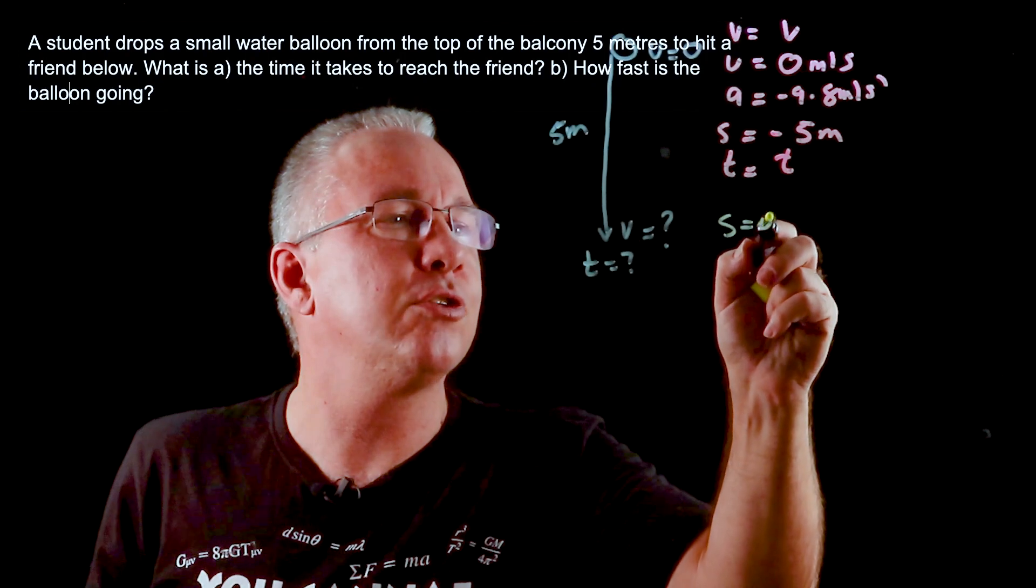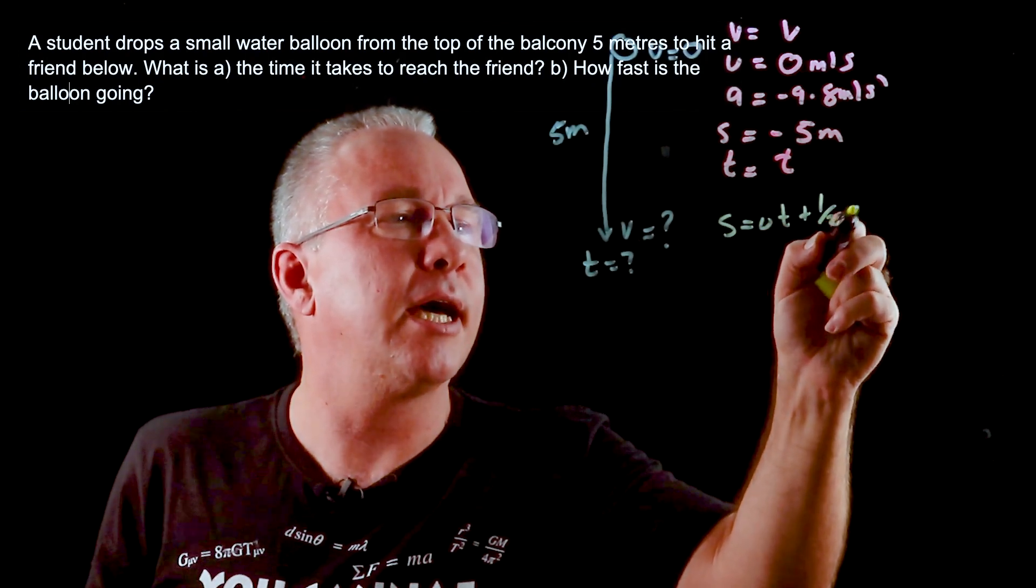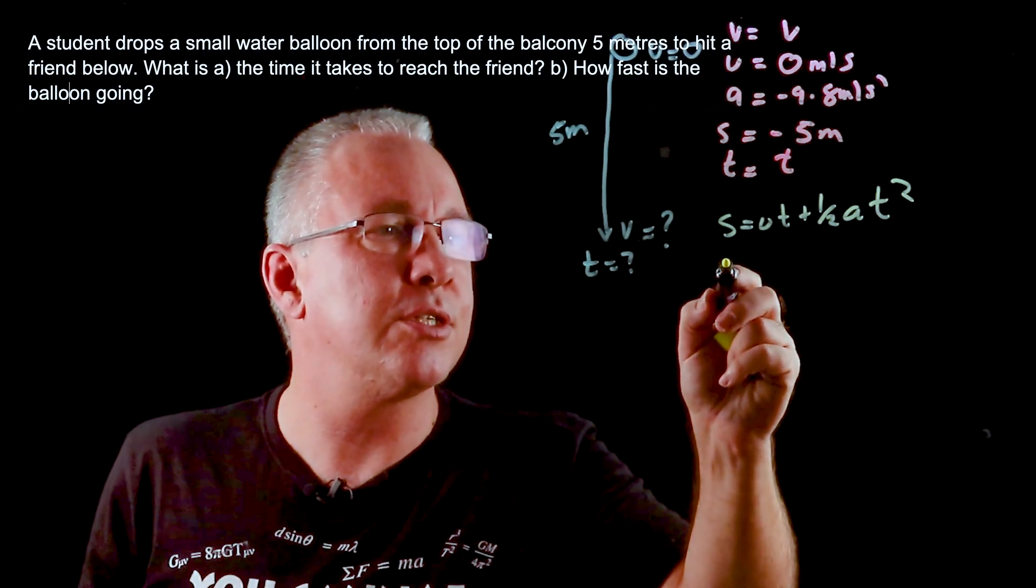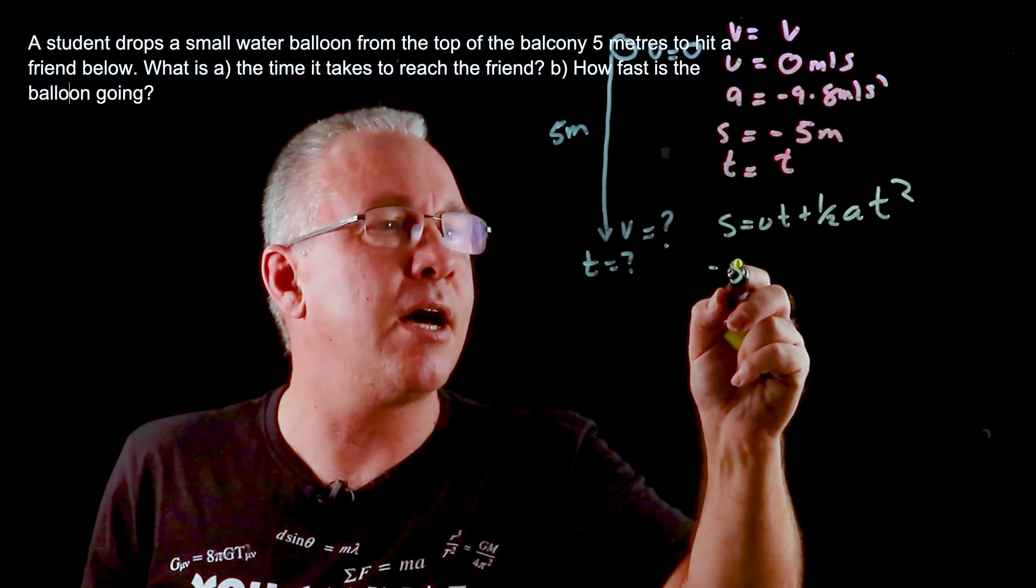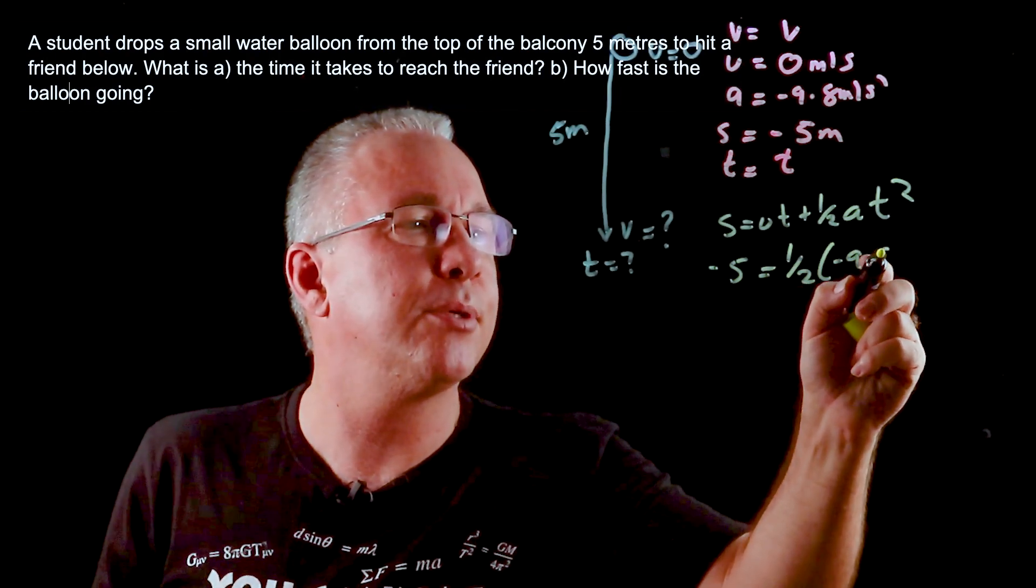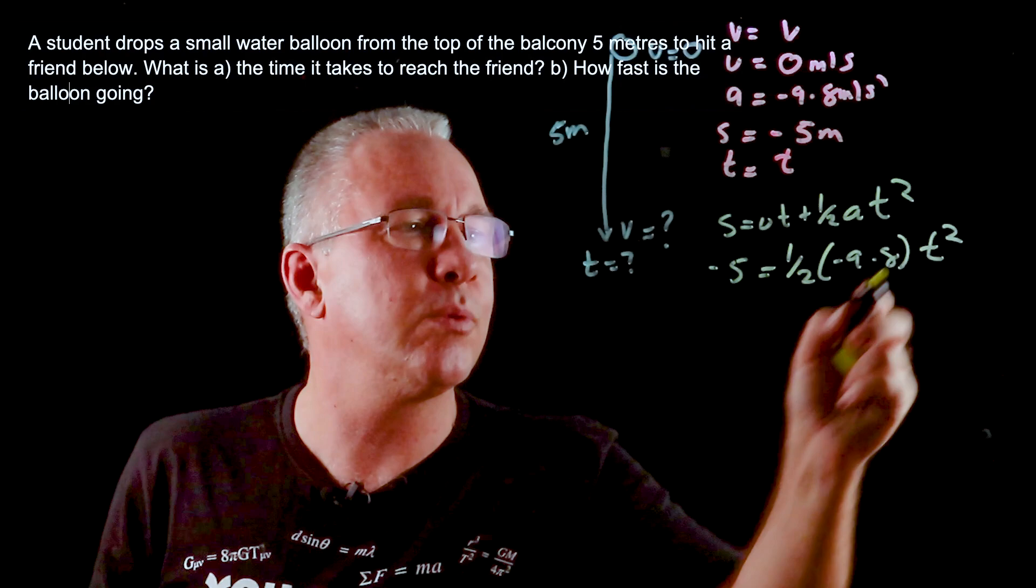Now our U is zero, so what we have is -5 = ½ × (-9.8) × T². The UT term disappears.